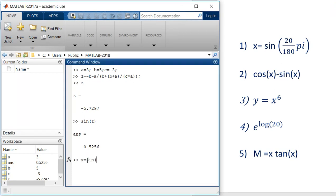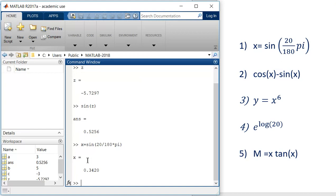Now let us try to solve some of these equations here. The first equation is x equals sine of 20 divided by 180 into pi. Pi we can write in small letters, so it will take up the value of pi which is 3.14, and this will solve this equation. Next equation is cos(x) minus sin(x). Cos of x should be in bracket minus sine of x. Value we will get is 0.667.